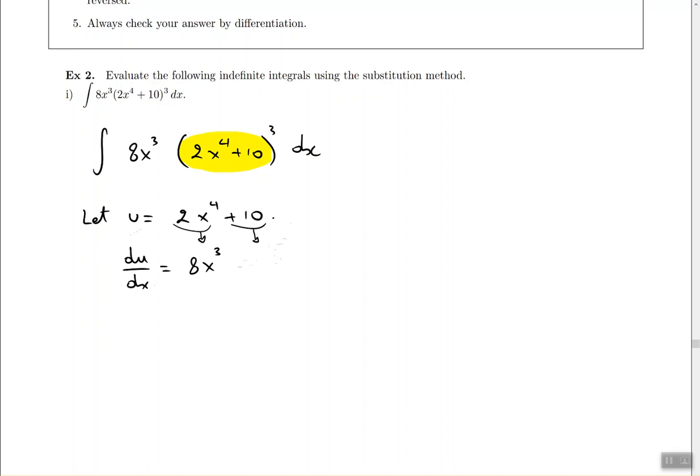The final thing we do is isolate du. We do that by multiplying both sides by dx. Whatever you do on one side, do the same on the other side. This way, we end up with du = 8x³ dx. I'm going to put a little box around this because this is the table that's going to help me rewrite the original problem.